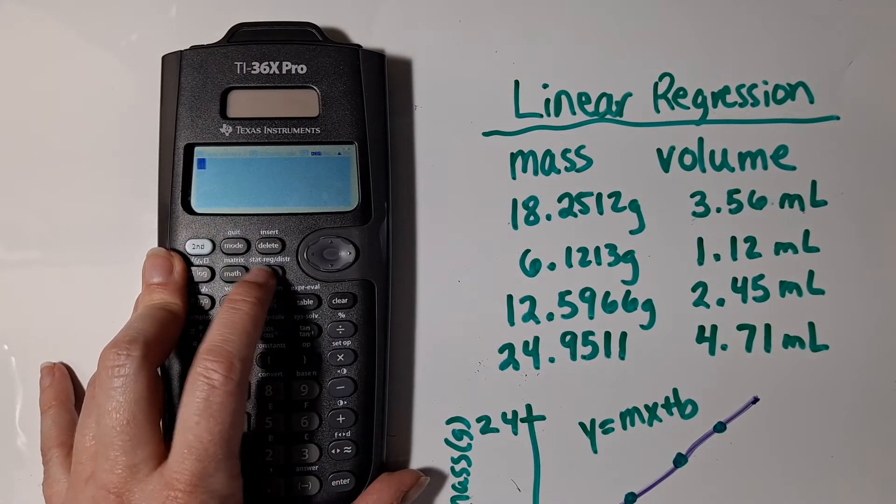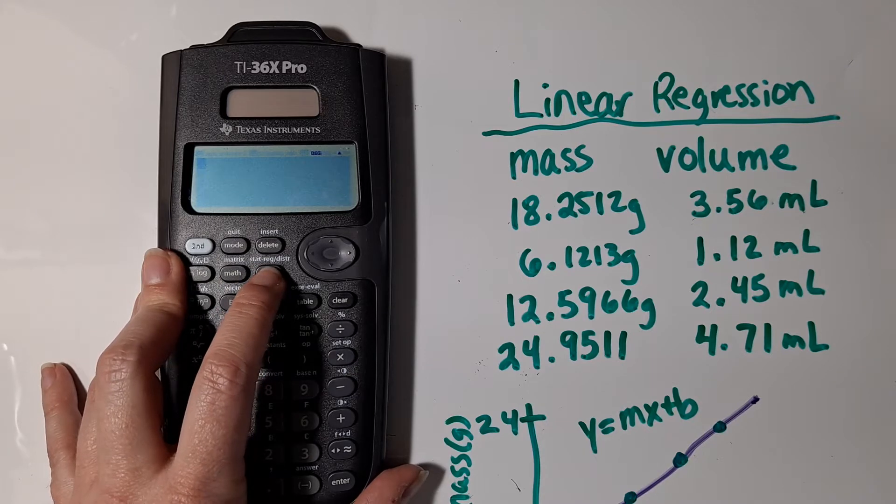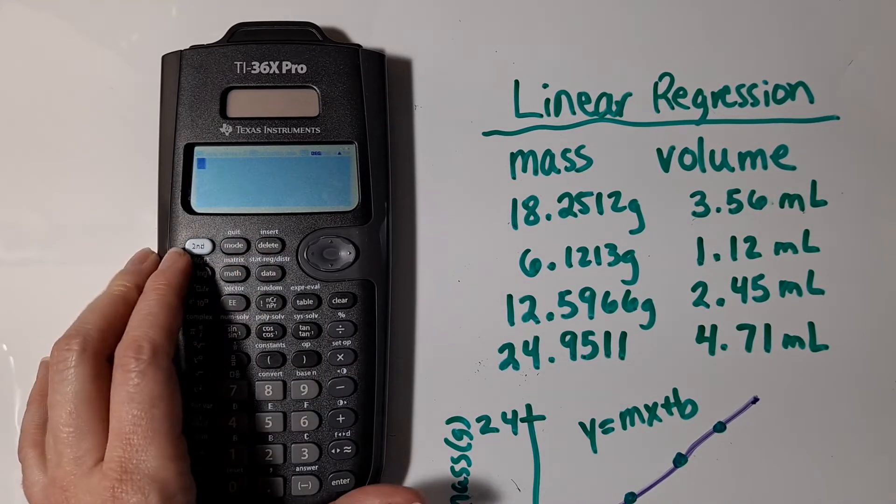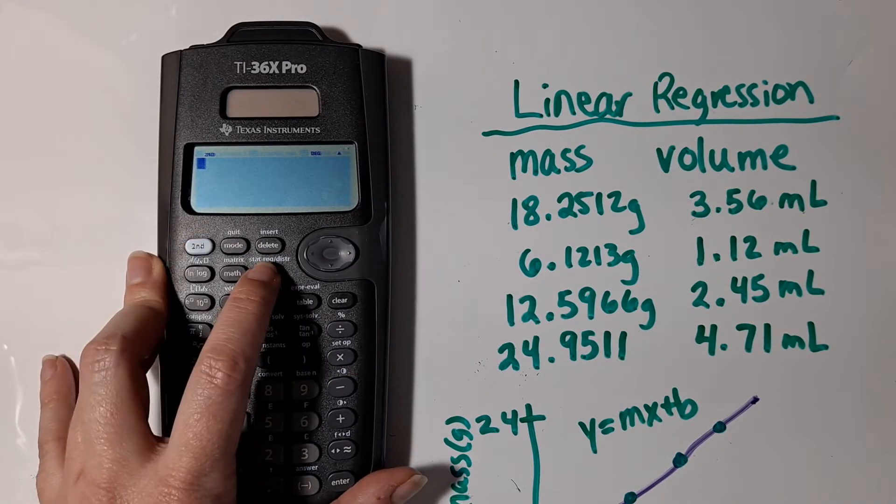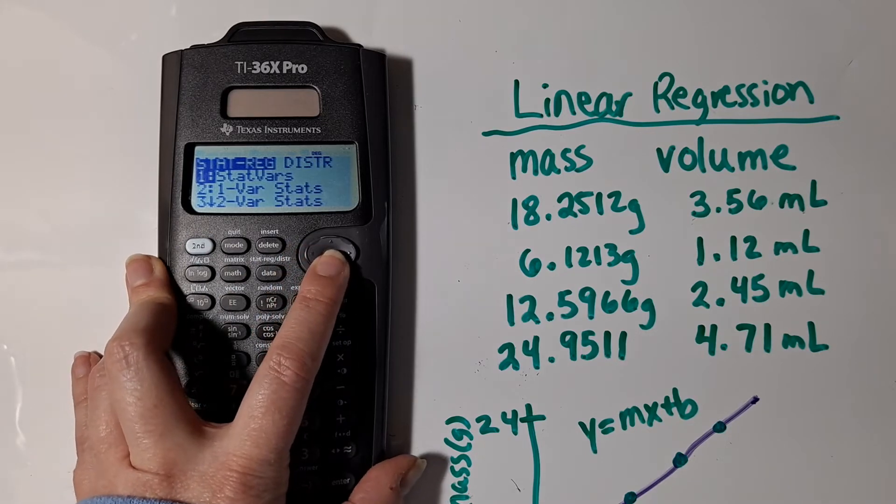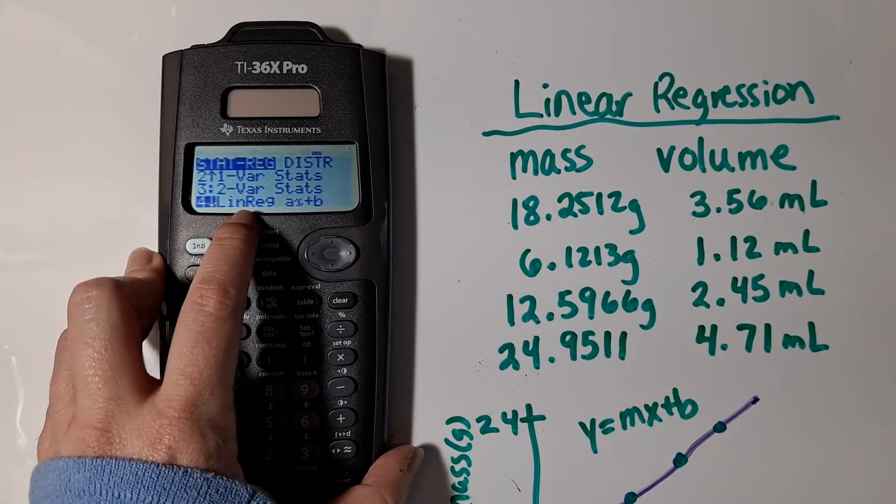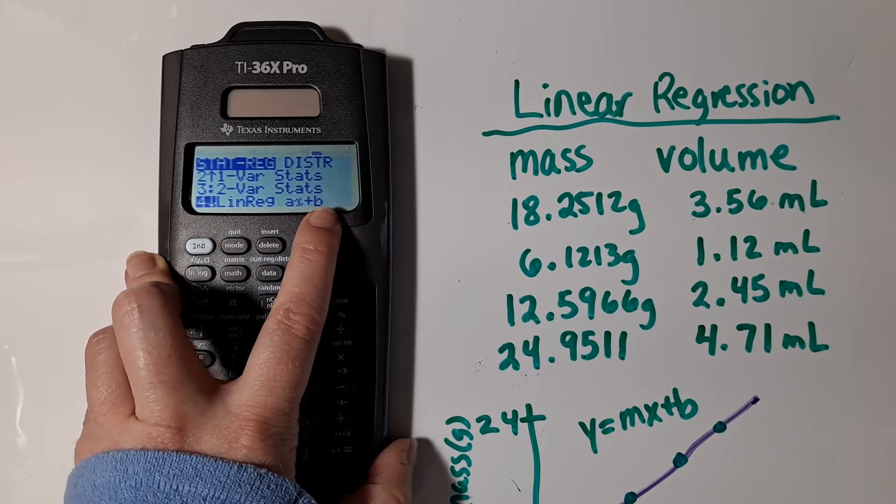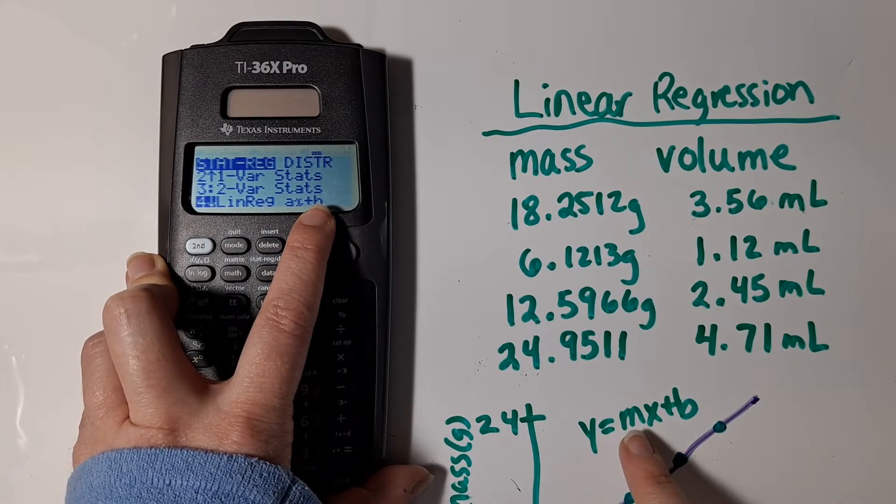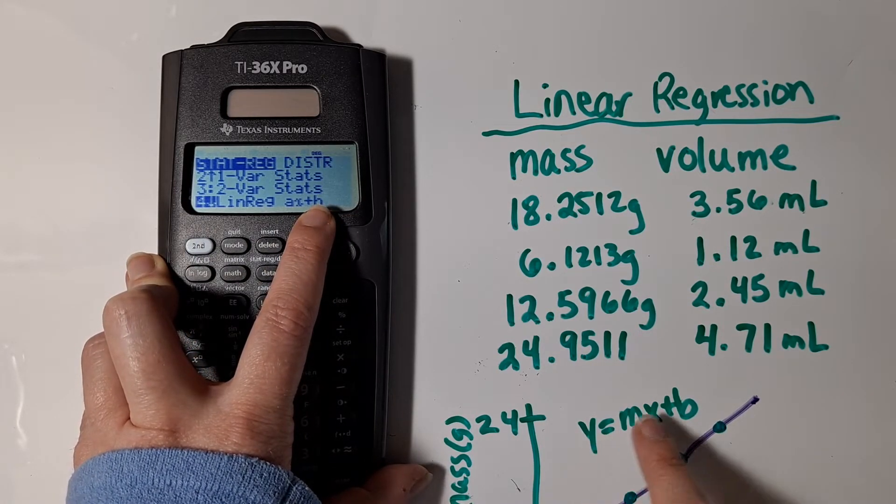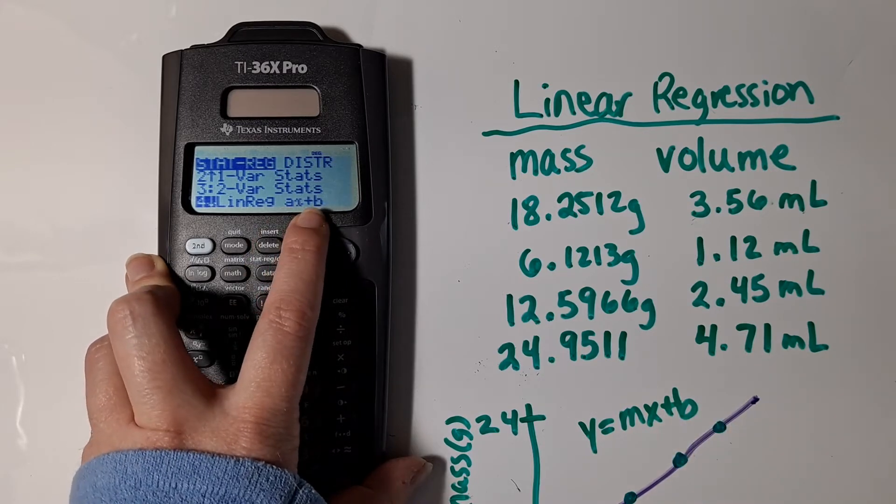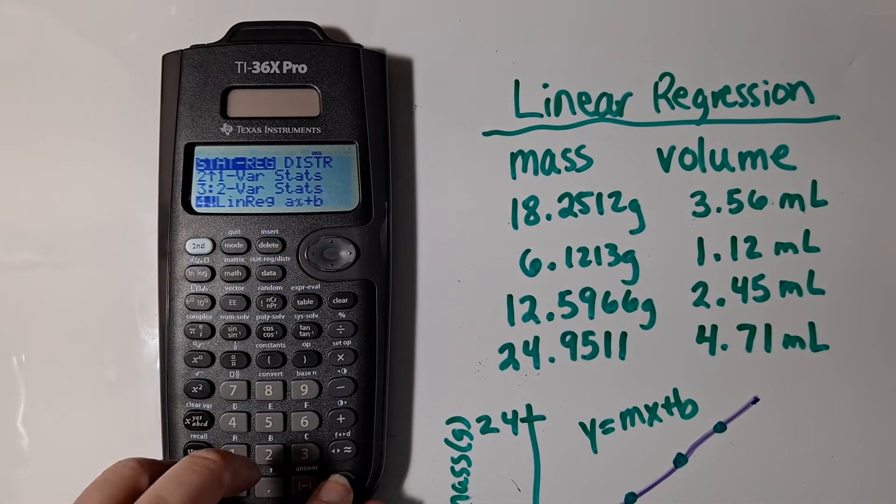Then I'm going to go to the second menu above the data. So I'm going to go stat reg distribution. I'm going to go second data. And then I'm going to scroll down to where it says linear regression AX plus B. You might have learned in school the equation for a trend line is Y is equal to MX plus B, but AX plus B is what this calculator says.